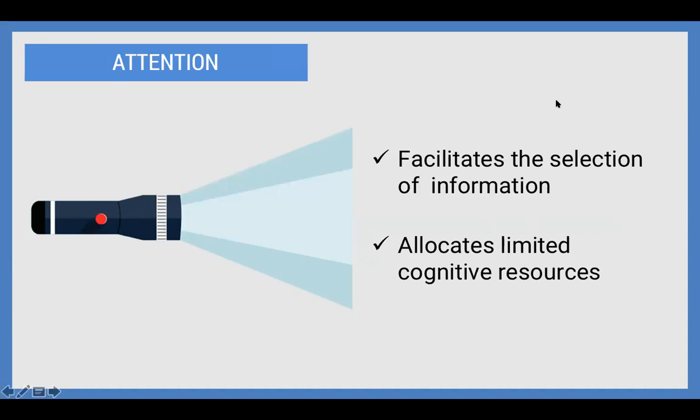If a lot of sensory information is coming through your senses, it's difficult to pay attention to all of it. Our attention allows us to select what we want to pay attention to — that's called selective attention. We often pay attention first to our survival: if your house is on fire, that comes first. But after that, we use attention to fulfill our goals, and those are the things that we pay attention to foremost.